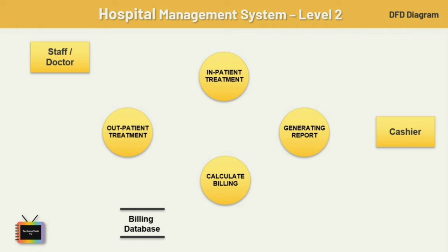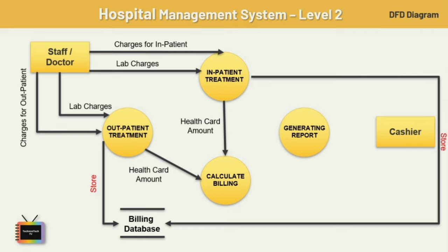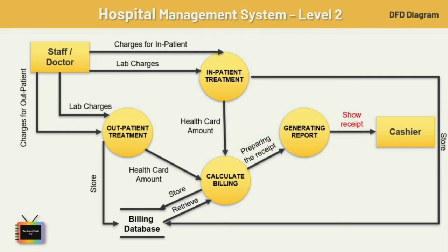The doctor in charge of a specific patient will input doctor charges, medical charges, room charges, and service charges for both inpatient and outpatient. This info is sent to the billing process and also stored in the billing database. The billing process calculates the bill and sends it to the generate report process to produce a report. The system can print a receipt with information on all charges, and the cashier will collect the money from the patient. This is just an example — you can add various entities and different processes according to your needs.